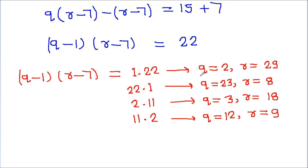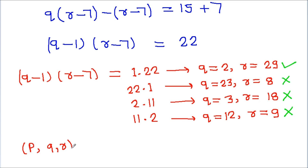Now q and r must be prime numbers. In the first case, q = 2 and r = 29 are both prime, so it is valid. In the second case, r = 8 is not prime, so it is not possible. In the third case, r = 18 is not prime, so it is also not possible. So we get p = q = 2 and r = 29.